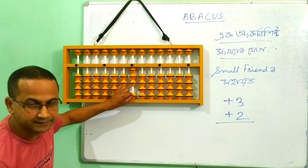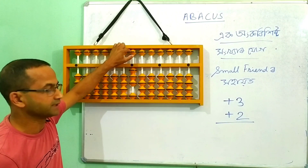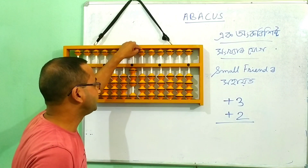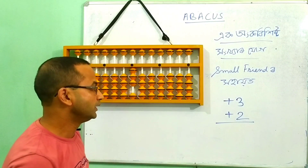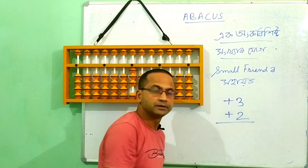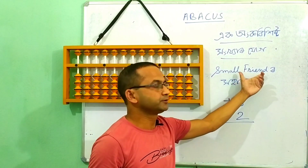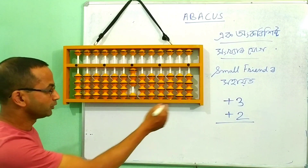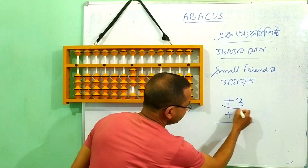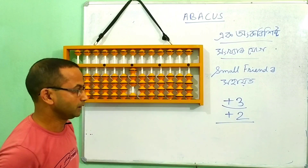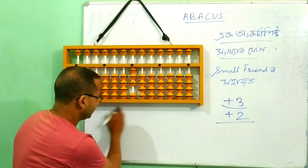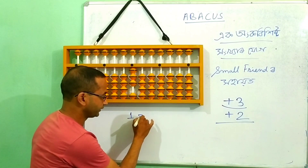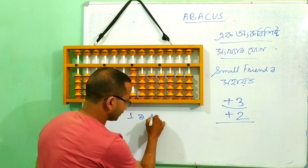If we have 2 plus variable, what do you say? 1 beat and 5 beat. If we have a 2, we have a plus 1. If we have a 2, we have a plus 5. But we have a plus 2. If we have a small finger, what do you say? We will say 1 or small finger.